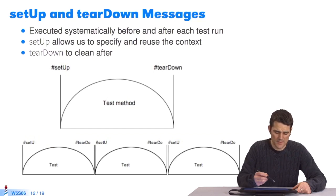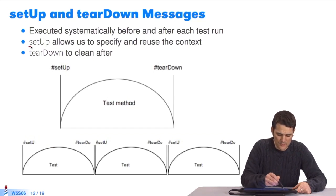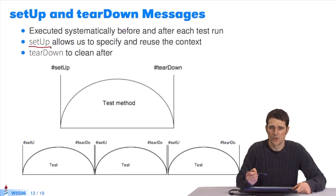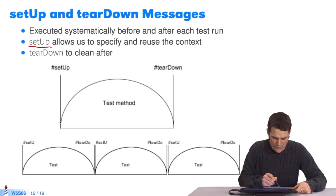The SUnit solution is to use the method setup, to factor out all the initializations before execution of a test. So what actually happens is, at the moment a test is executed, just before a test, therefore, a method starting with a test string is executed, we'll trigger execution of the method setup, and specify the context.